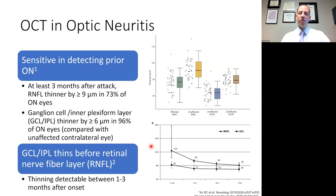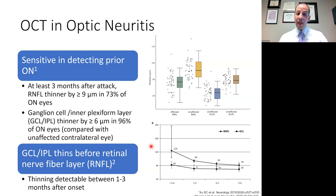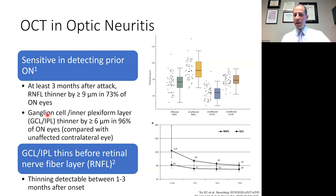What about OCT, or optical coherence tomography? This is something that has really taken off and is available in many clinical centers. With acute optic neuritis it's not very helpful unless you're really trying to rule out other causes. However, it is quite sensitive in detecting prior optic neuritis. At least three months after an attack, the retinal nerve fiber layer is thinner by at least nine microns in 73% of optic neuritis eyes. Also, the ganglion cell complex — consisting of the ganglion cell layer and the interplexiform layer — is thinner by at least six microns in almost 96% of optic neuritis eyes when compared with the unaffected eye. This top graph shows decreased RNFL thickness in the affected eye, and the ganglion cell complex also shows a decrease.